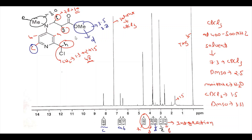All the different types of protons are present in our NMR spectra, so our compound is confirmed by the NMR spectra. This is the way you can analyze the NMR spectra of a given molecule.